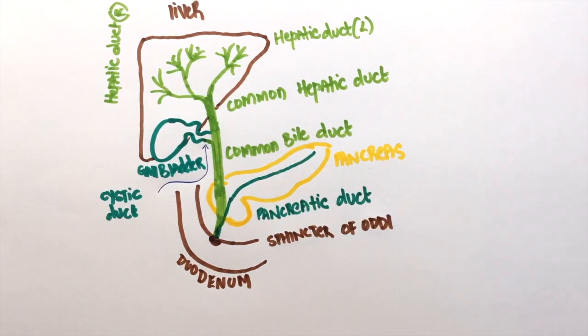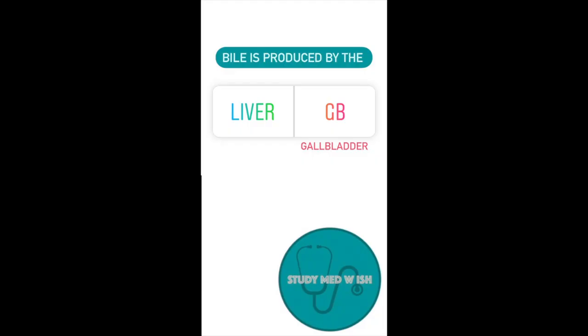Now that we've understood the structures, let's dive into our first question. Question 1. Bile is produced in the liver or gallbladder? Bile is produced in the liver. However, it is concentrated and stored in the gallbladder.